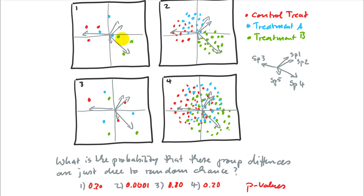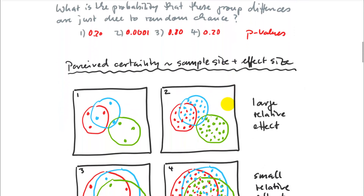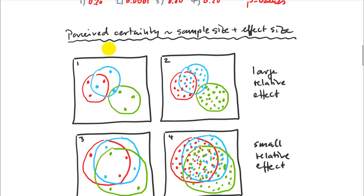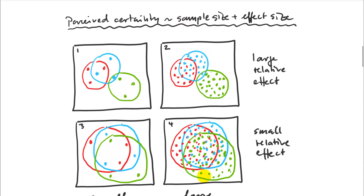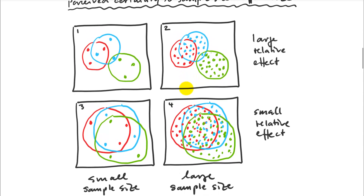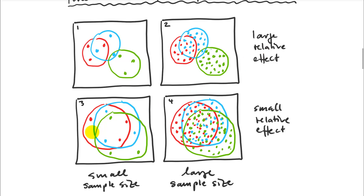That's what the p-value really means: what is the probability that these group differences are just random chance events? What's become clear from this exercise is that certainty about group means being different is a function of sample size — you generally trust things more with a larger sample — and effect size. We have a relatively large effect size in the first two experiments, and less so in the second row where groups are not as far separated.